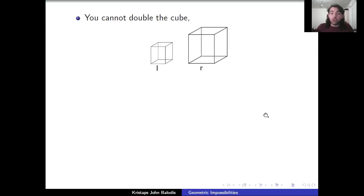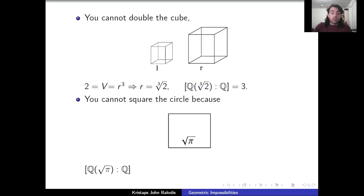All right, moving on to the doubling of the cube. Suppose we have a cube of unit volume, so all of its sides are length one, and I want to construct some new cube whose side length is r, whose volume is twice the original. So just thinking about the arbitrary units we define, we want the volume of this new cube to be two. But we know the volume of a cube of side length r is r cubed. In other words, r has to be the cubed root of two, but this is a degree three extension.